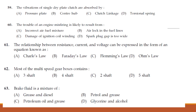The vibrations of a single dry plate clutch are absorbed by: pressure plate, center hub, clutch linkage, or torsional spring. The answer is torsional spring.